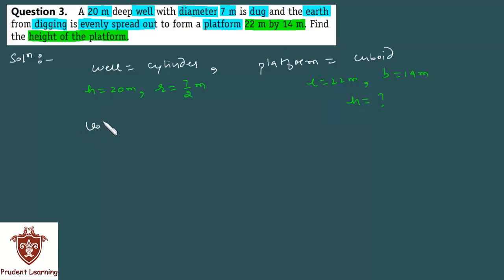Here we have volume of earth dug equal to the volume of the platform. And we know that volume of earth dug is nothing but the volume of the well, which implies that volume of the well which is in the shape of a cylinder is equal to the volume of platform, which is in the shape of a cuboid.